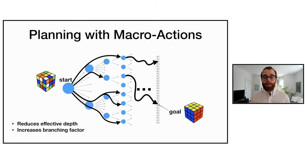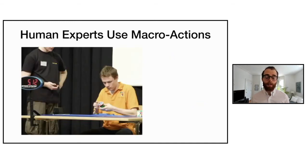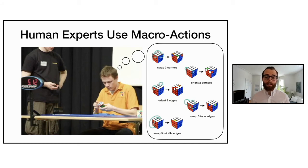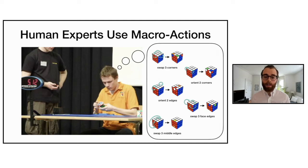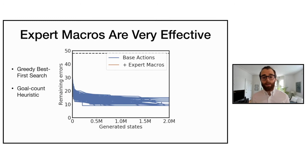Macro actions are remarkably effective in human expert speed solving competitions, where experts solve the Rubik's Cube in single-digit seconds by memorizing sequences — macro actions — that handle particular scenarios. For example, if you're in a state requiring swapping three corners, you can execute a pre-learned macro action to reach the desired state. These kinds of macros are also very effective for planning even with greedy best first search using the goal count heuristic.